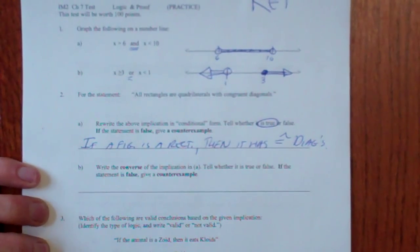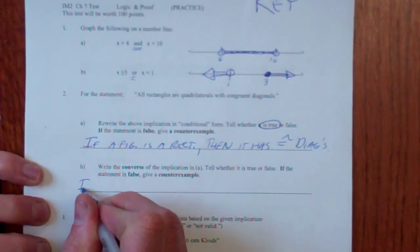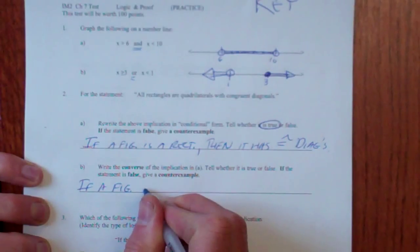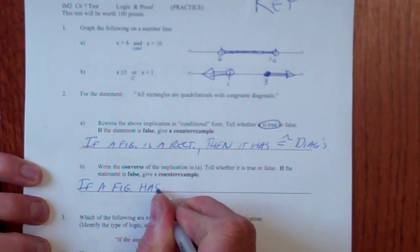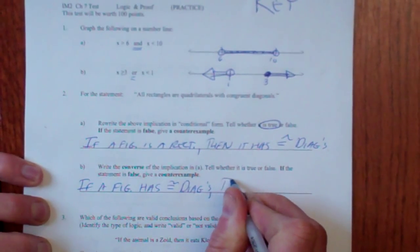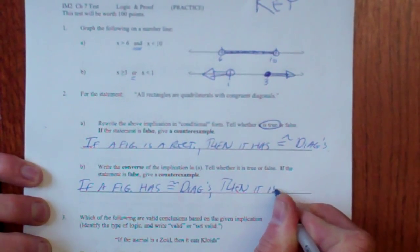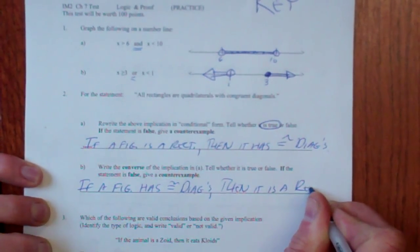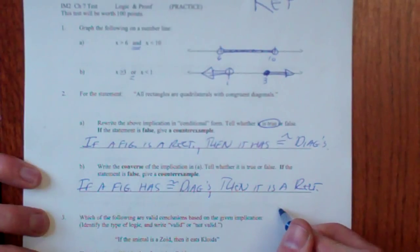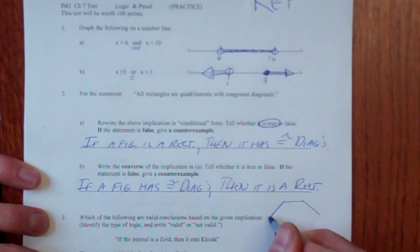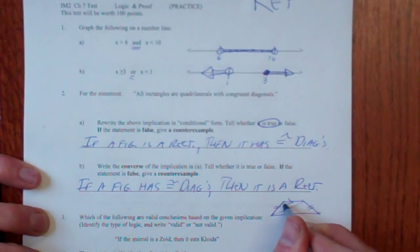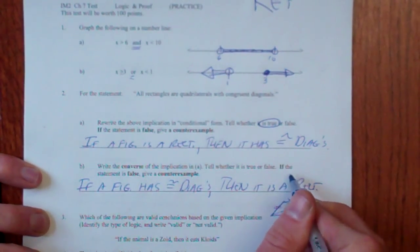Write the converse of the implication. So, if a figure, sometimes you have to supply that a little bit, has congruent diagonals, then it is a rectangle. And, if you remember your stuff from our chapter on that, that is false. Because it could be an isosceles trapezoid that is like this. False. And these diagonals would be the same. That's your counterexample.